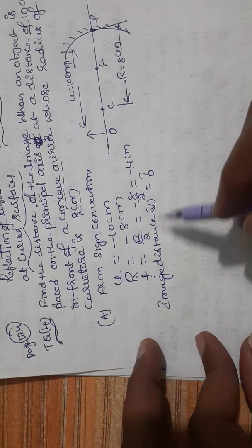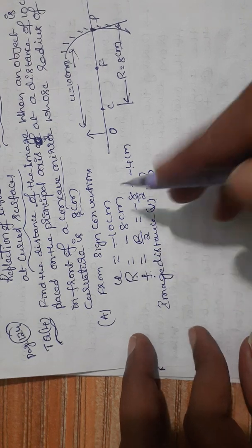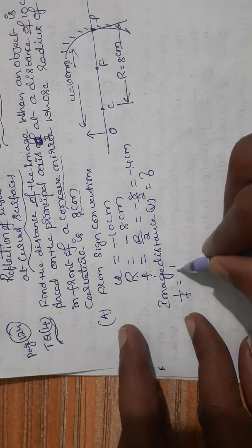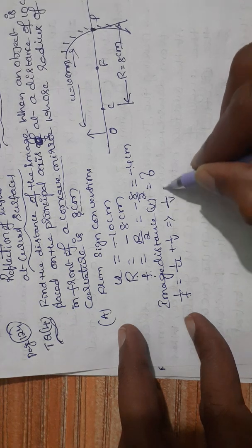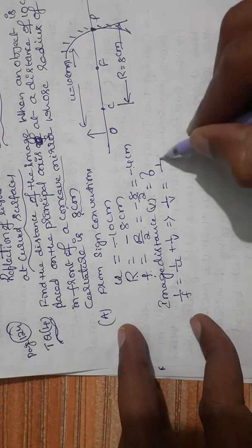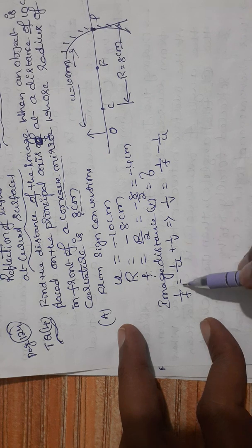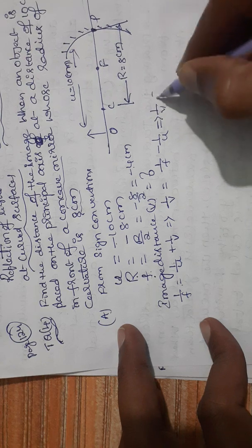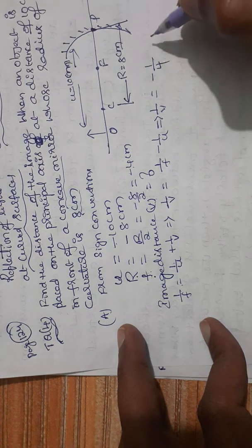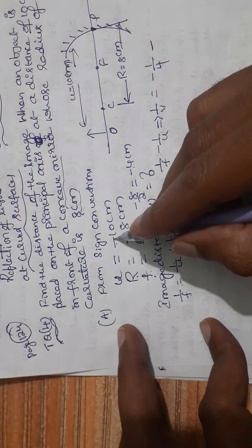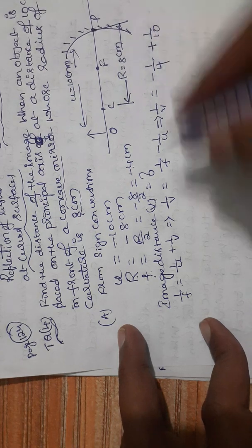We want to find the image distance, denoted by V. We have a relation among U, f, and V — that is, object distance, focal length, and image distance: 1/f = 1/u + 1/v. Rearranging to find image distance: 1/v = 1/f − 1/u. Substituting the values, 1/v = −1/4 minus 1/u, and since U is minus 10, the two negatives give plus, so that becomes plus 1/10.